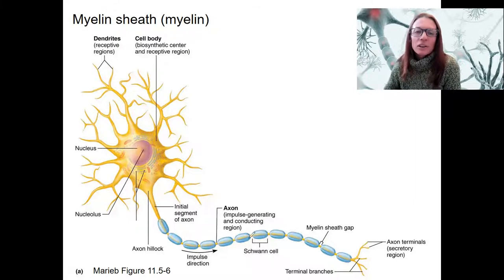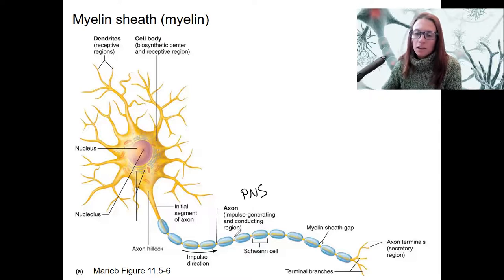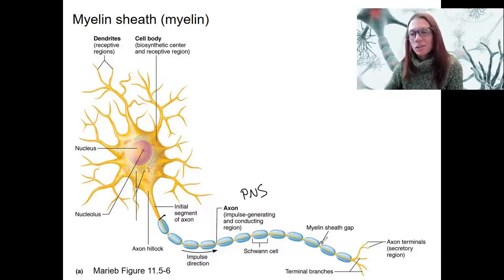And here, this would be in the PNS, because they're Schwann cells that make up this myelin sheath. The myelin sheath is this entire thing, also called myelin.